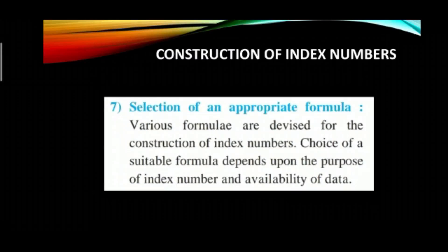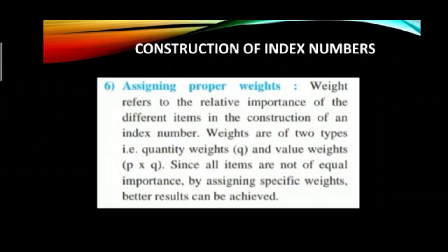Seventh: selection of an appropriate formula. Various formulas are devised for the construction of index numbers. The choice of a suitable formula depends upon the purpose of the index number and the availability of data. There are many formulas available, and you need to select the most suitable one depending on the purpose and the data available. In these seven points, we have learned how to construct index numbers.